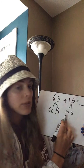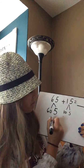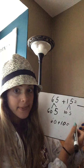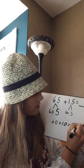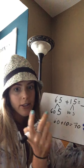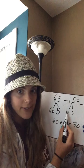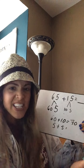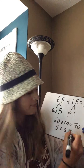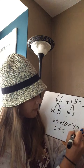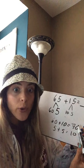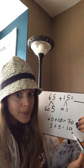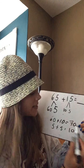So I know 60 plus 10 more would be 70, right? Because we can count by tens: 10, 20, 30, 40, 50, 60, 70. Then we have our five and five in our ones place. What is five plus five? 10 — five plus five is 10. And then we have two answers: 70 in the tens place and 10 in the ones place. So our last thing we need to do is add these together.